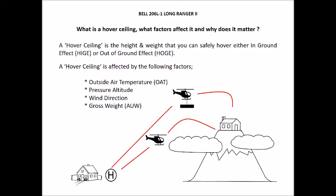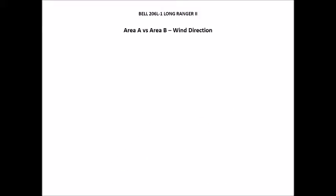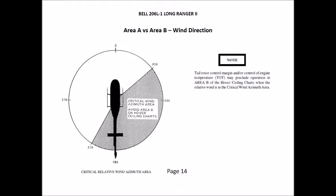Understanding what a hover ceiling height is, what factors affect it, and why it matters, let's look at the considerations for calculating it. The first thing is what they call area A versus area B — the wind direction. On page 14 of the flight manual, there's a diagram explaining that the tail rotor control margin or engine temperature may preclude operation in area B of the hover ceiling charts. If the wind comes from anywhere between 50 degrees off the nose around to 210 degrees off the nose, it's going to limit the height or weight at which we can hover both in-ground effect and out-of-ground effect. So when doing our calculations, we need to factor in where the wind is coming from.